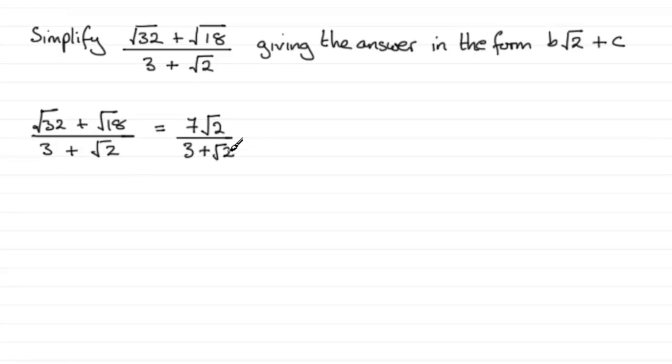But we need to rationalize this, get rid of this denominator here. And I've shown you in previous videos on this, that when you get a fraction like this, you can times it by essentially 1. It doesn't alter the value. But how we form this one is by taking these two terms here and switching the sign in between them. And multiplying top and bottom by, in this case, 3 minus root 2.